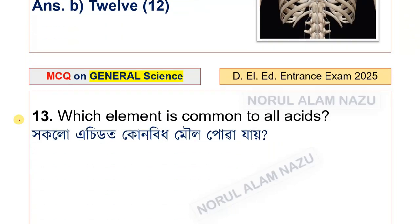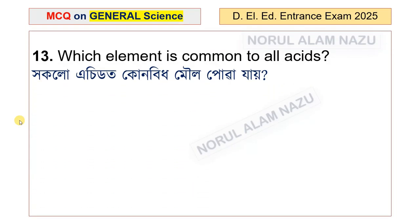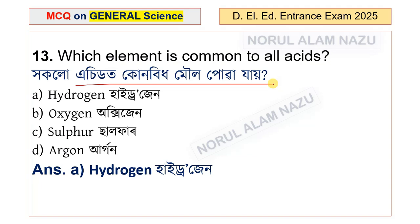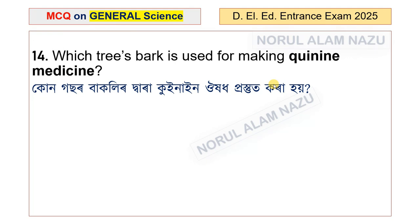Question number 13: Which element is common to all acids? Options are hydrogen, oxygen, sulfur, and carbon. The answer is hydrogen. Question number 14: Which tree's bark is used for making quinine medicine?